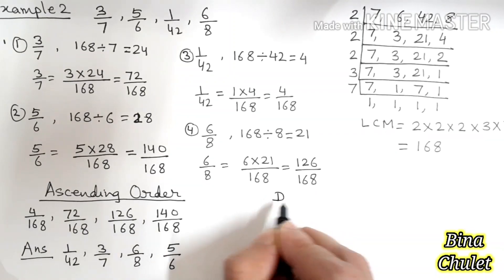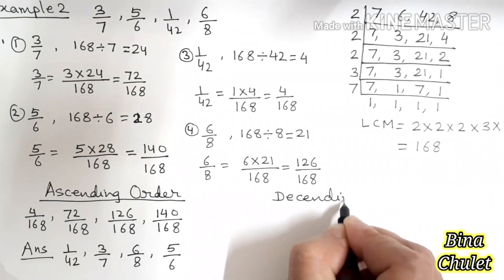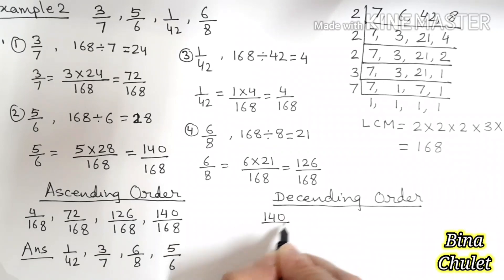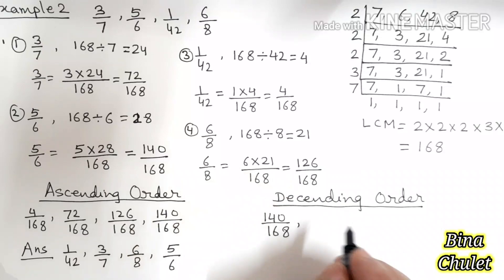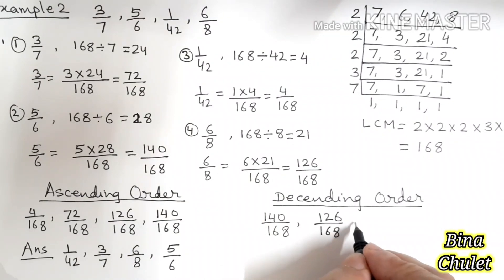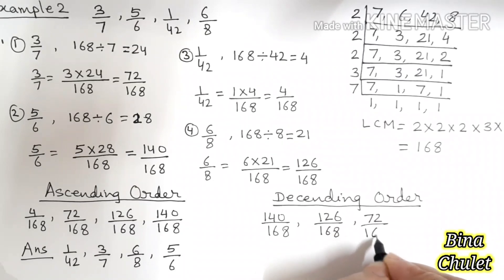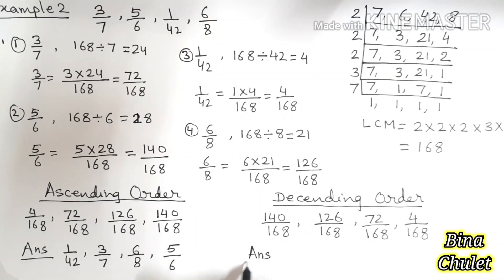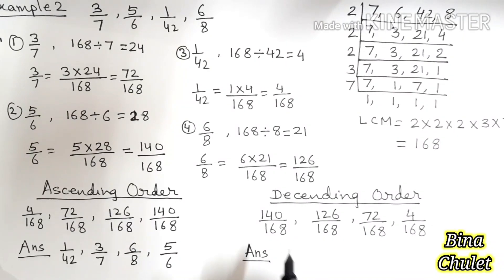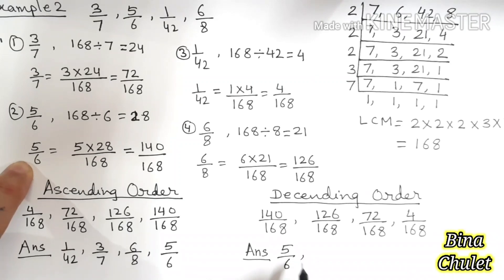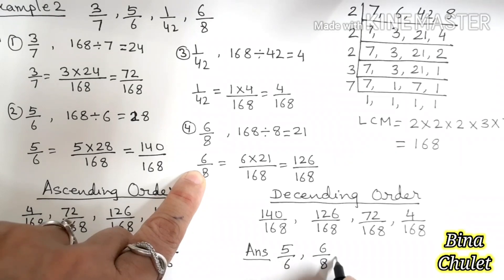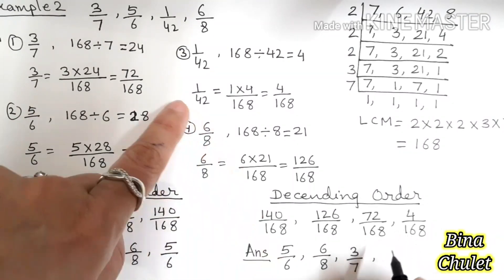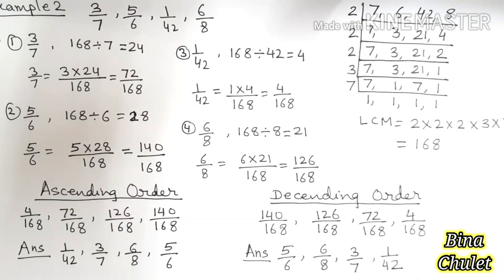Do the opposite for descending order. In reverse order, the highest first: 140 upon 168, then 126 upon 168, then 72 upon 168, and lastly 4 upon 168. But this is not the answer — we have to write the fractions which were actually given to us. So for the final answer: 5 upon 6, then 6 upon 8, then 3 upon 7, and finally 1 upon 42. This is your answer.